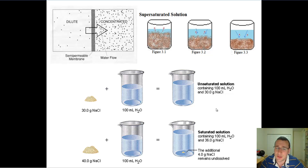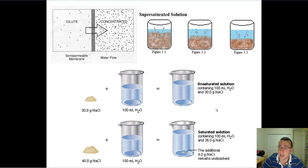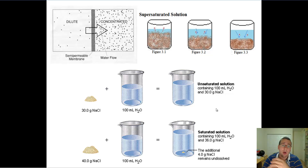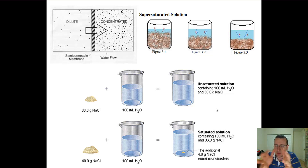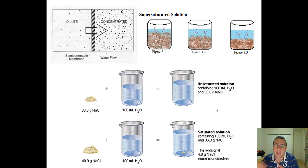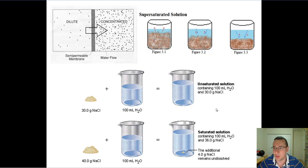An unsaturated solution has less solute in it than can fit — you can still add more. A saturated solution can't hold any more; if you add anything else, it won't dissolve no matter how hard you try. This has to do with how much solvent you have, because eventually you run out of solvent to do the dissolving. You can also create a supersaturated solution by heating it up, which expands the space between molecules and lets you fit a little more in. When you let it cool, it looks dissolved even though it has more than it should. But the moment you drop a single drop of something else in, the whole thing will come out of solution — which is really cool.